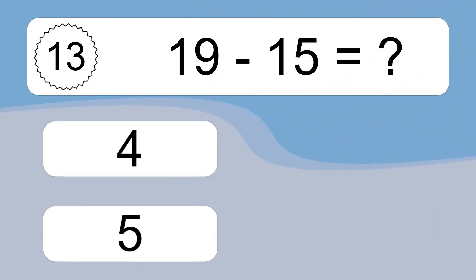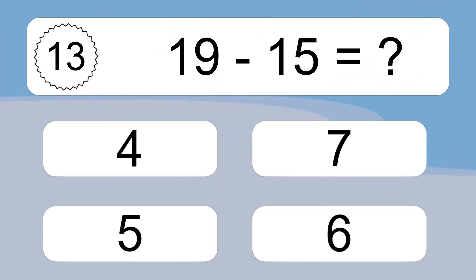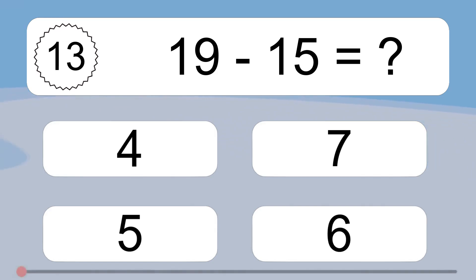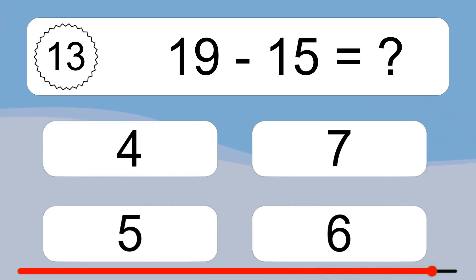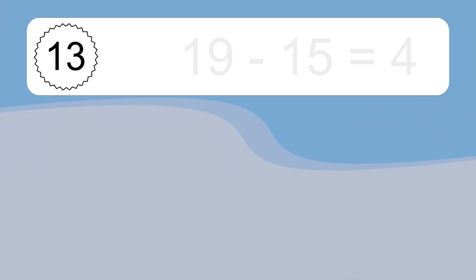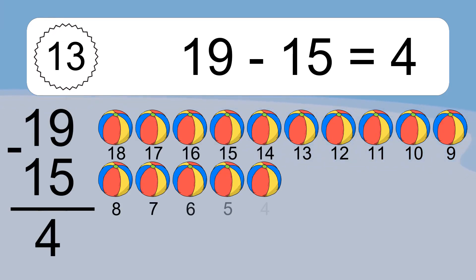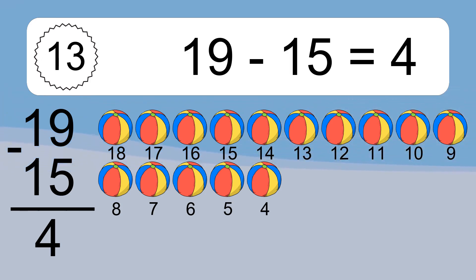19 minus 15 equals what? 19 minus 15 equals 4. Let's count it: 18, 17, 16, 15, 14, 13, 12, 11, 10, 9, 8, 7, 6, 5, 4.